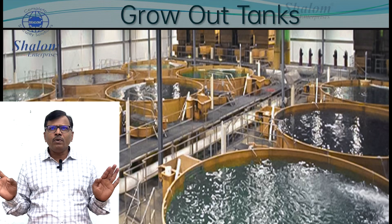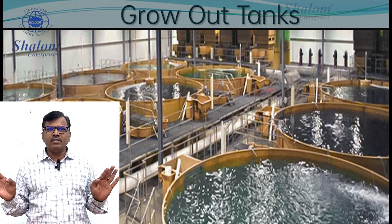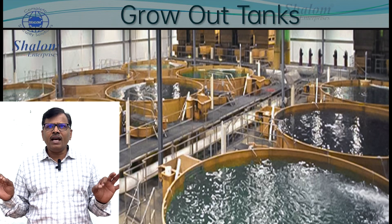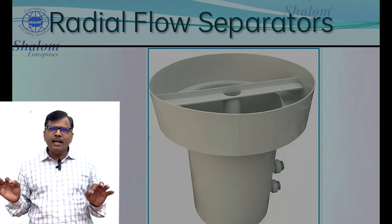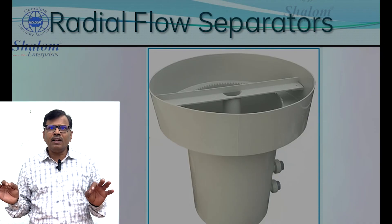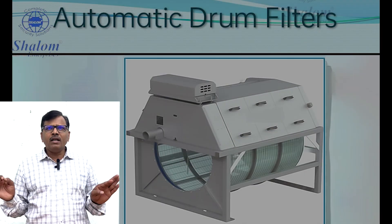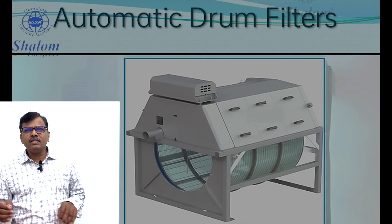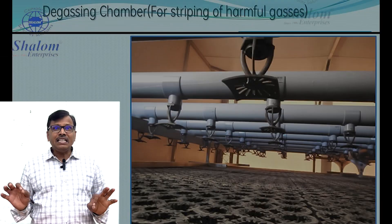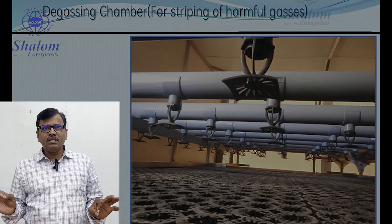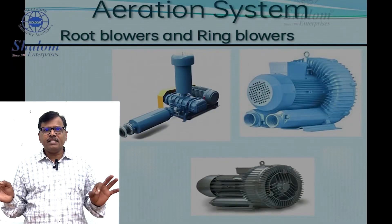The main components of RAS are: grower tanks and nursery tanks, pipelines, radial flow separators, automatic drum filters, bio filters, and degassing chambers and aeration systems.